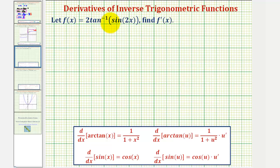Let f of x equal two inverse tangent of sine two x. We want to find f prime of x, the derivative function. Notice how f of x is a composite function. It's actually a composite function of three functions, so we'll have to be careful when applying the chain rule.